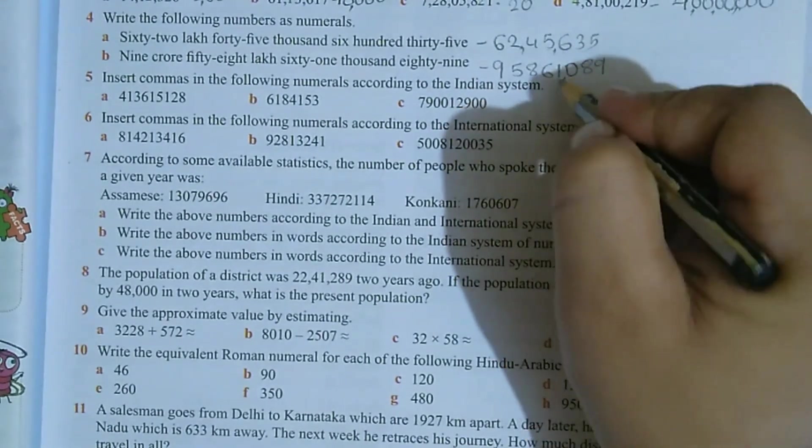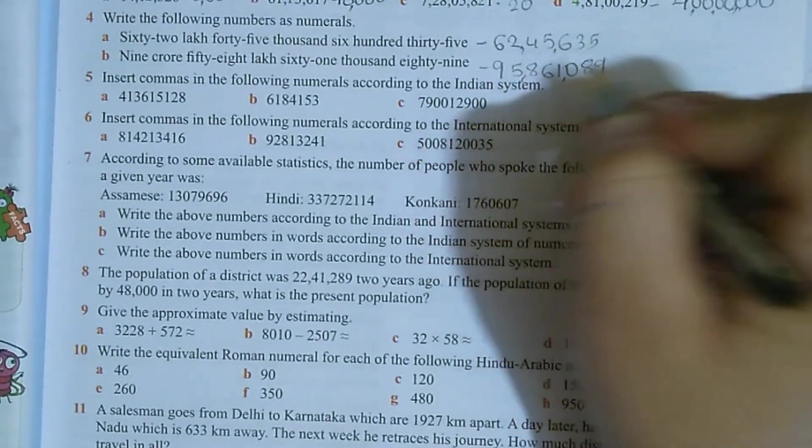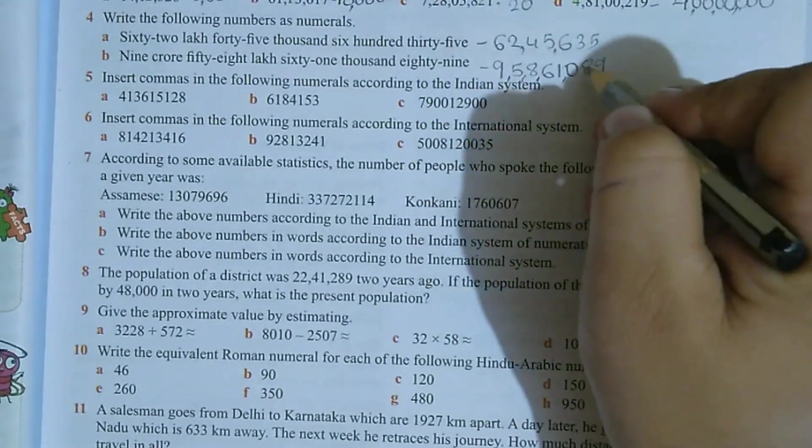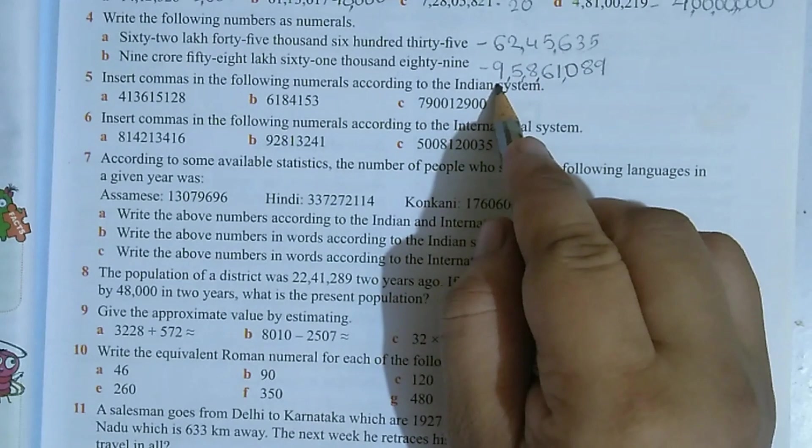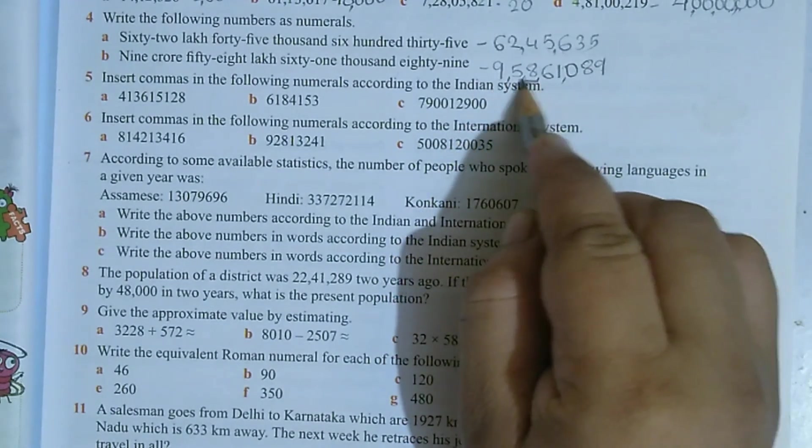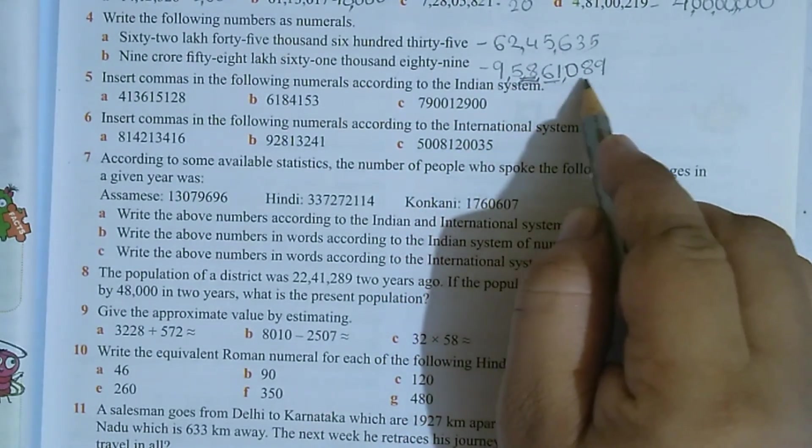So in the hundreds place we will write 0, then write 89. So let's count, first digit count. So here it will come, then here. 1, 2, 3, 4, 5, 6, 7 are there for 9. So what is this number? 9 crore 58,61,089.